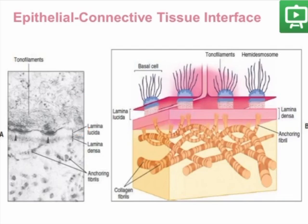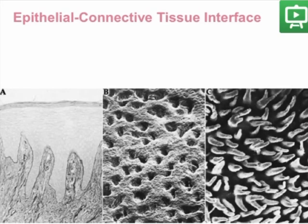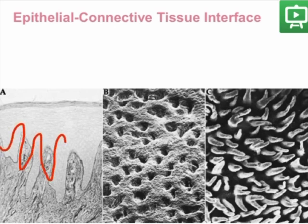This basement membrane has characteristic hemidesmosomes that connect the basal cells with the connective tissue underneath. Along with the hemidesmosomal connection in the basement membrane, what keeps the attachment of the oral epithelium to the lamina propria is the undulated or wavy surface of the interface.